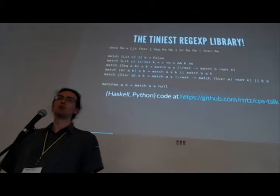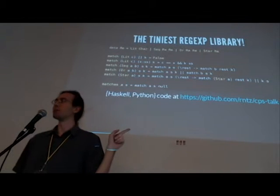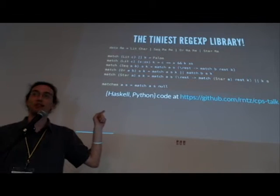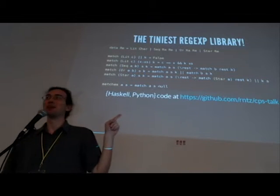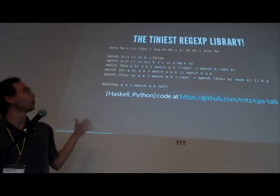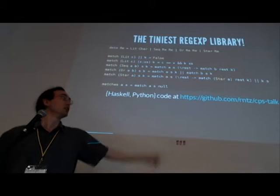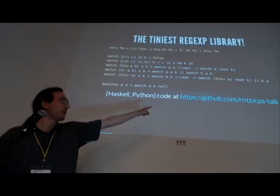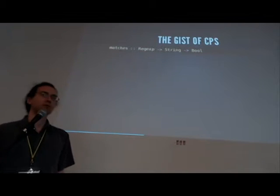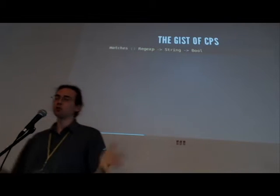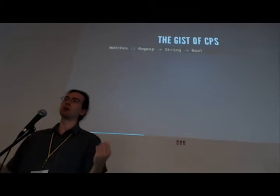The example I'm going to use to help you understand continuation passing style is the world's tiniest regex library. That's it — that's all of it. It doesn't actually match all regular expressions, that's why it gets to be so tiny. But it captures the core of what regular expression matching is about. If you want a version with comments explaining what's going on, or a Python version with comments, you should visit that GitHub repo. I'm not going to explain every single line of code, even though there are only about 10 of them. Instead, I'll just try to get across the gist of why continuation passing style is a useful way to attack the problem of matching a string against a regular expression.